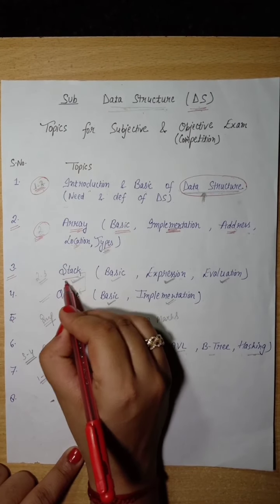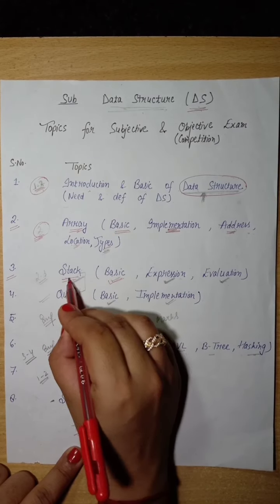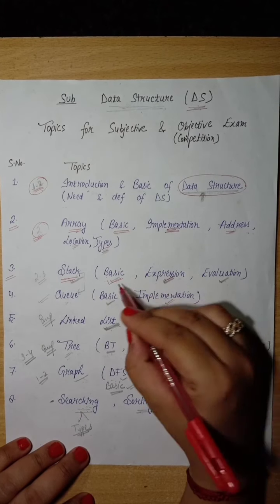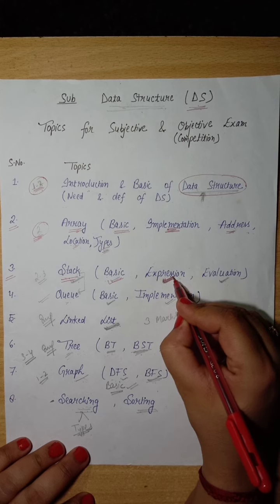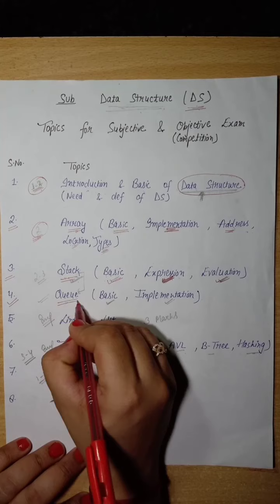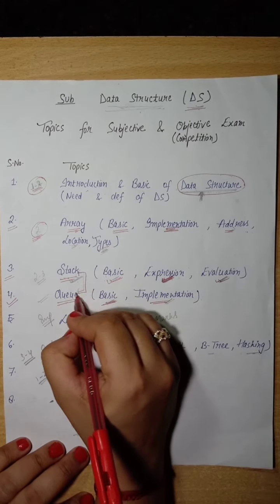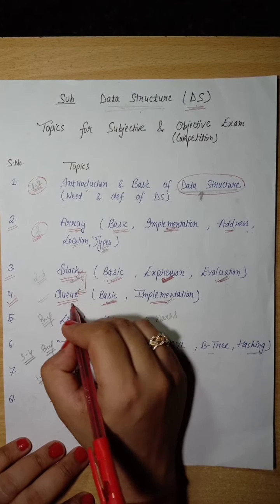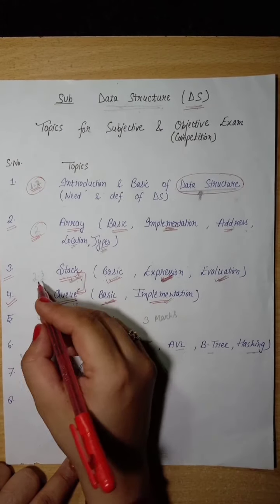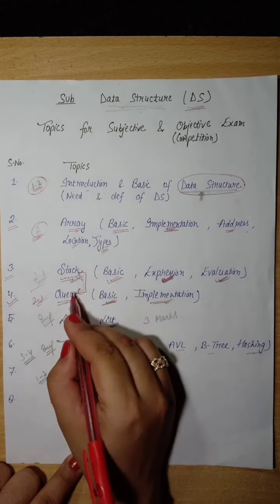The third topic is Stack. We will study what are the basics of Stack, where is the stack used. There is arithmetic expression in the stack, so we will study that arithmetic expression and evaluate it. The next topic is Queue. Then we will learn about Queue, how to implement it in Stack and Queue, how to use it. From these two topics, questions come from 2 to 3 marks.